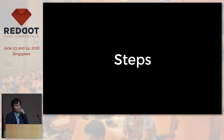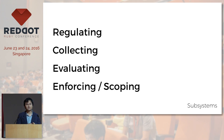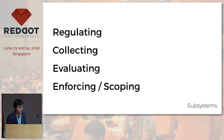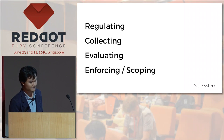So this is actually a work in progress — I'm still improving my system in our application. But before I talk about the steps, let me first talk about the subsystems of authorization. If we're talking about authorization, there are actually four parts: regulating, collecting, evaluating, and enforcing, or scoping.